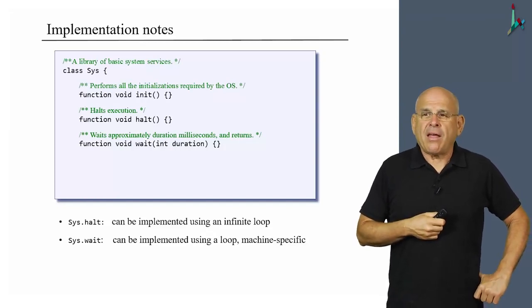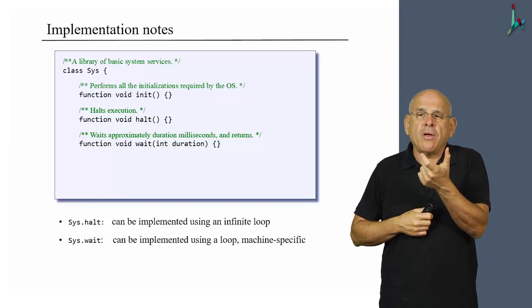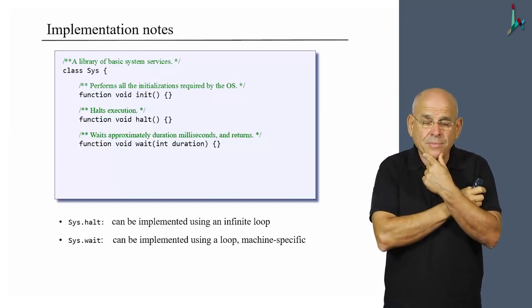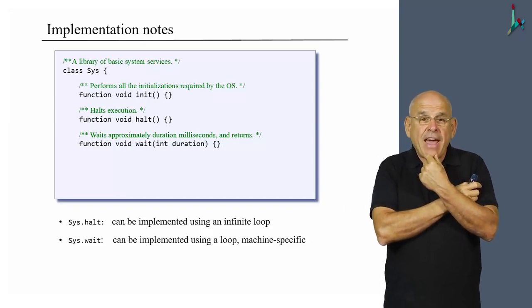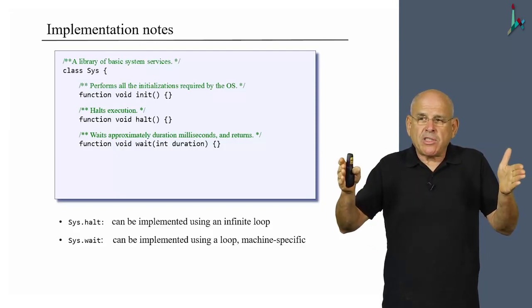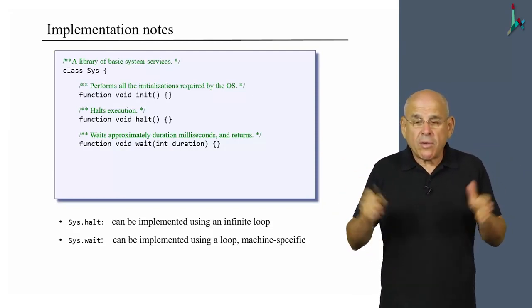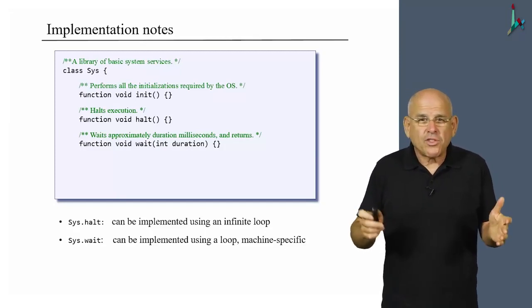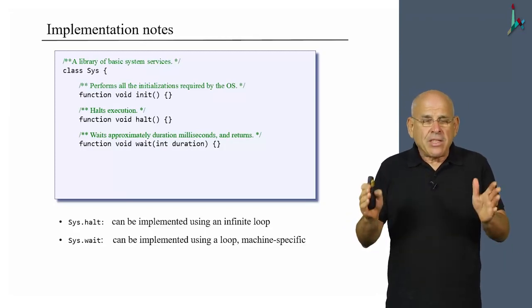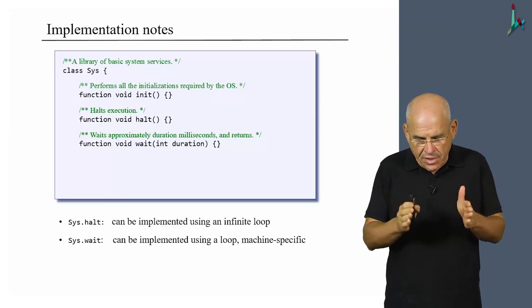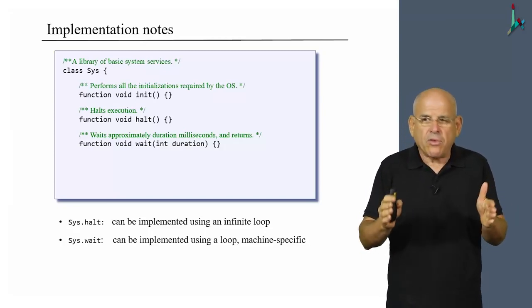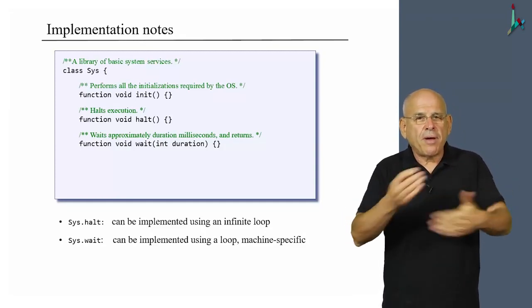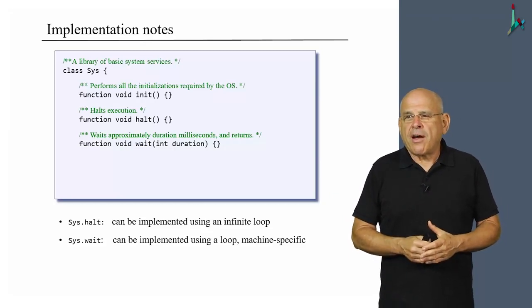And the loop should have some delay factor in it, some constant. That playing with this constant will help you make sure that the runtime of this loop will be such that it conforms to the required duration. So if your computer is very fast, then the delay factor will have to be large because you want to slow it down. If your computer is slow, you will want a small delay factor to make this loop operate fast enough. So you have to get yourself a watch, or you can use your cell phone for this, and write this loop and then time it.